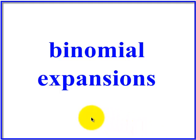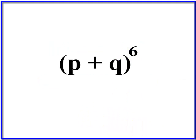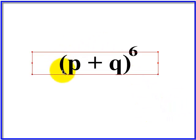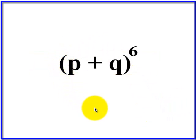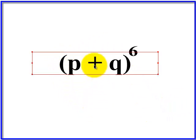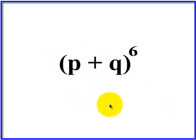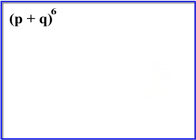I'm going to show you three different ways to do a binomial expansion. A binomial expansion is when you have two terms and that quantity, the sum of that quantity, is raised to some exponent. So they look like this. We're going to use p and q as their terms.